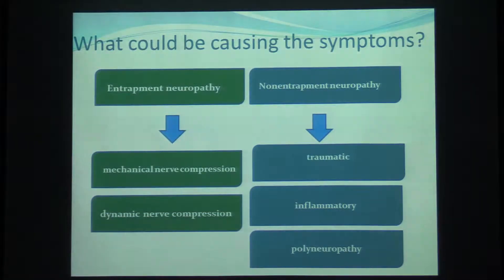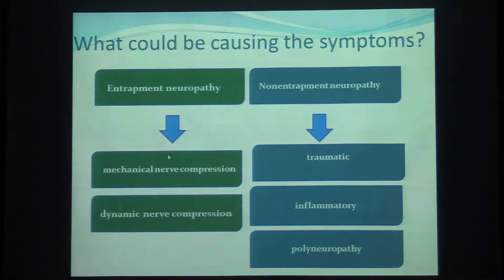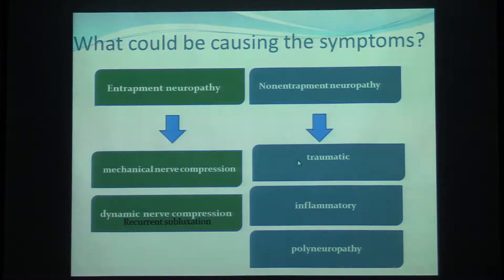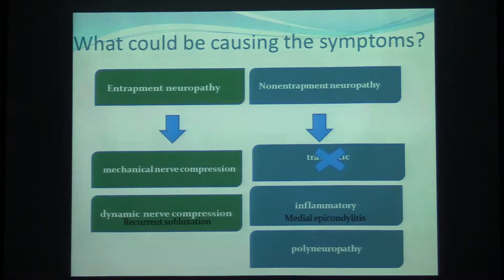I will now discuss what could be causing these symptoms. We are talking about ulnar nerve neuropathy. We can put them into categories: entrapment neuropathy and non-entrapment neuropathy. Entrapment neuropathy can be divided into mechanical nerve compression or dynamic nerve compression, such as subluxation. It could also be traumatic, but that's not our case — we don't have a history of trauma, so we can eliminate that. It could also be inflammatory, such as medial epicondylitis, the golfer's elbow.